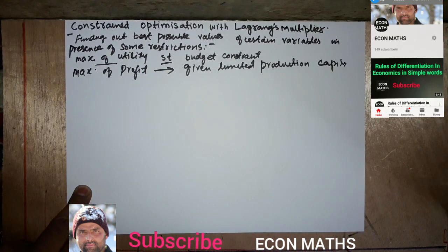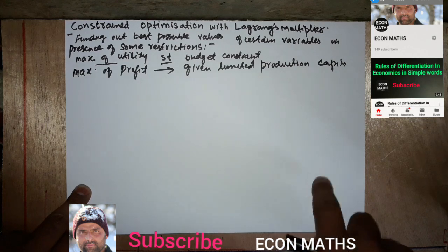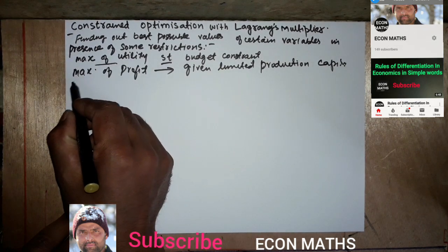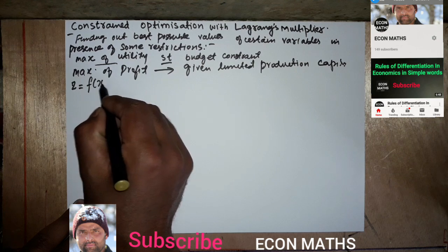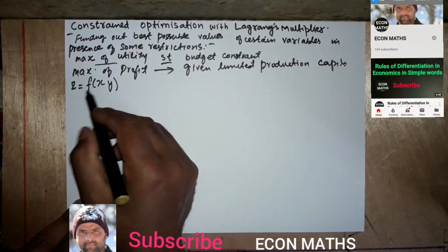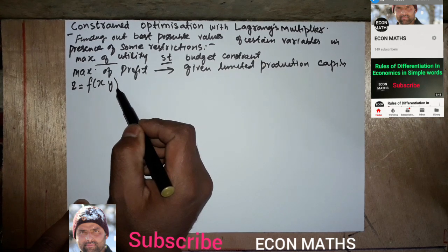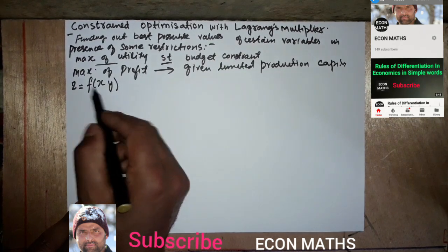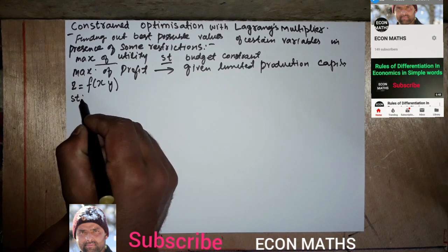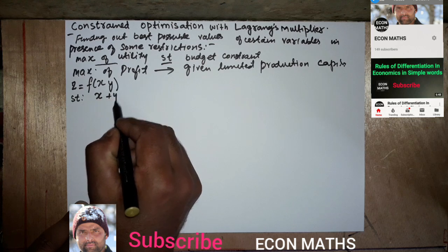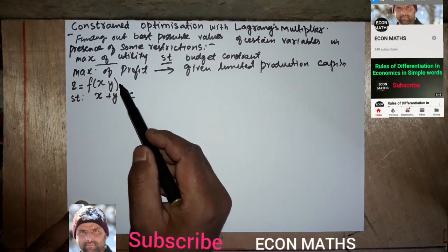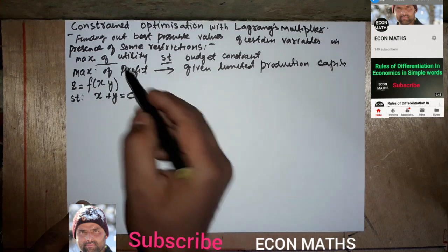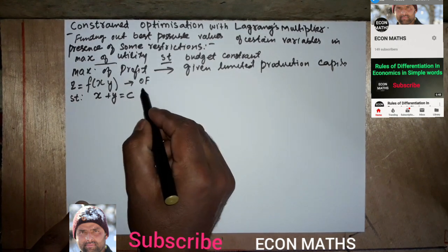We will see how to derive the Lagrange's multiplier. For example, if we have a function Z = F(X, Y) — this can be a utility function or a profit function — with a constraint such as X + Y = C. If it were a utility function, this would be the budget constraint. So Z = F(X, Y) is called the objective function, and X + Y = C is the constraint.